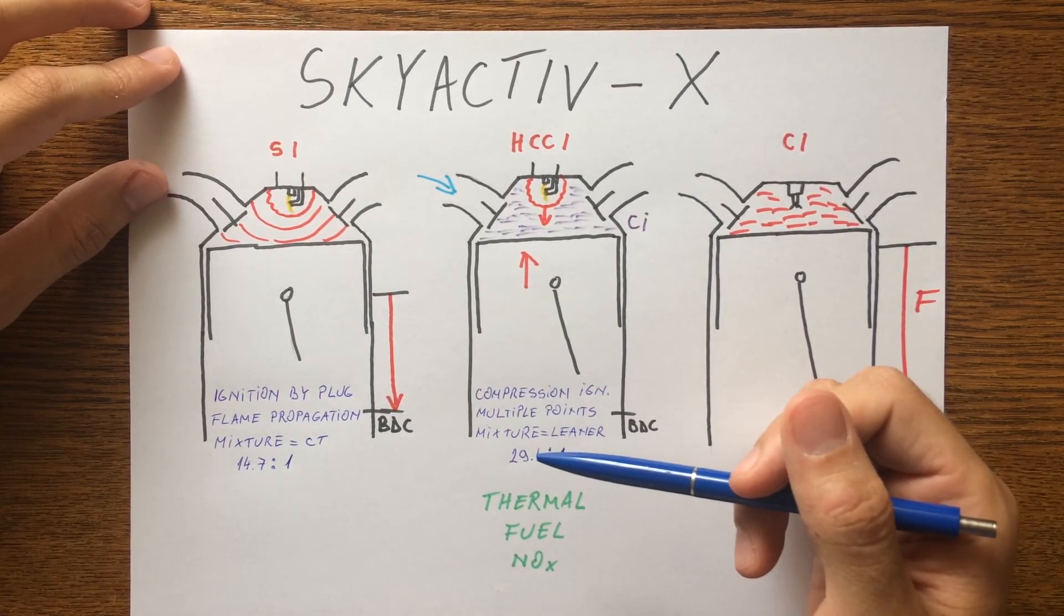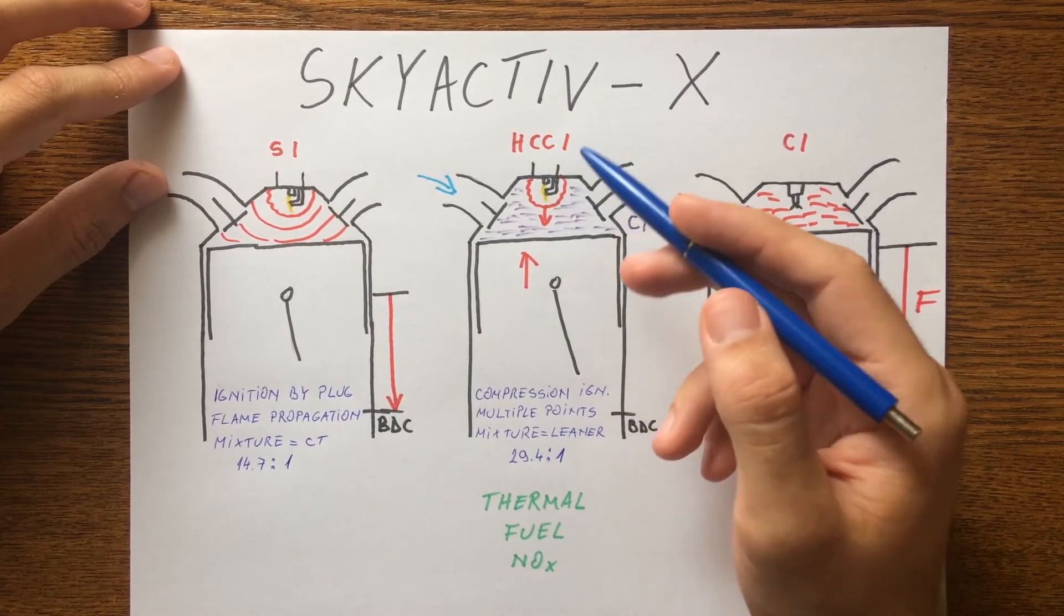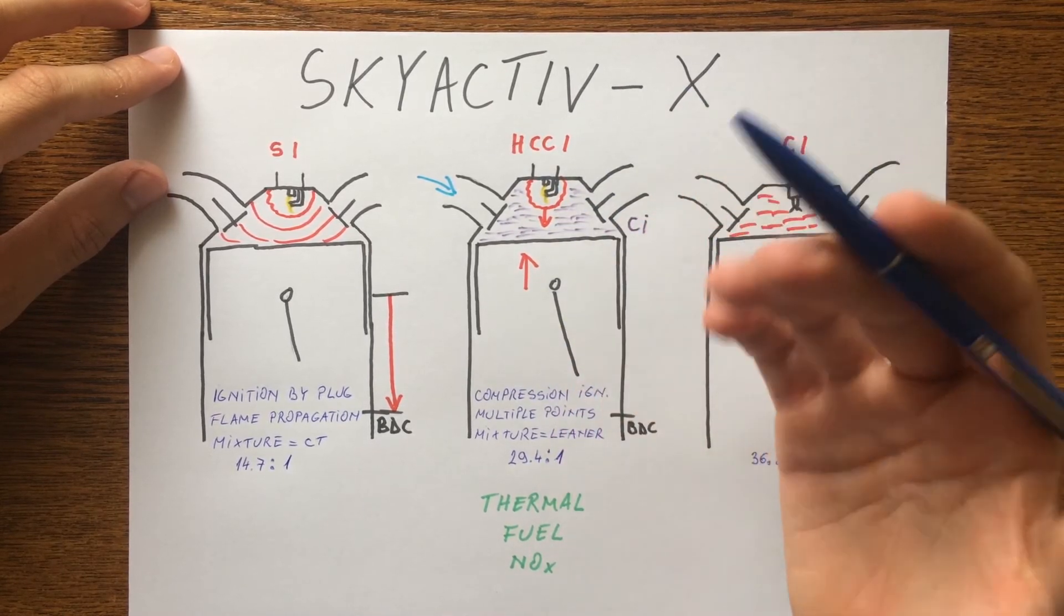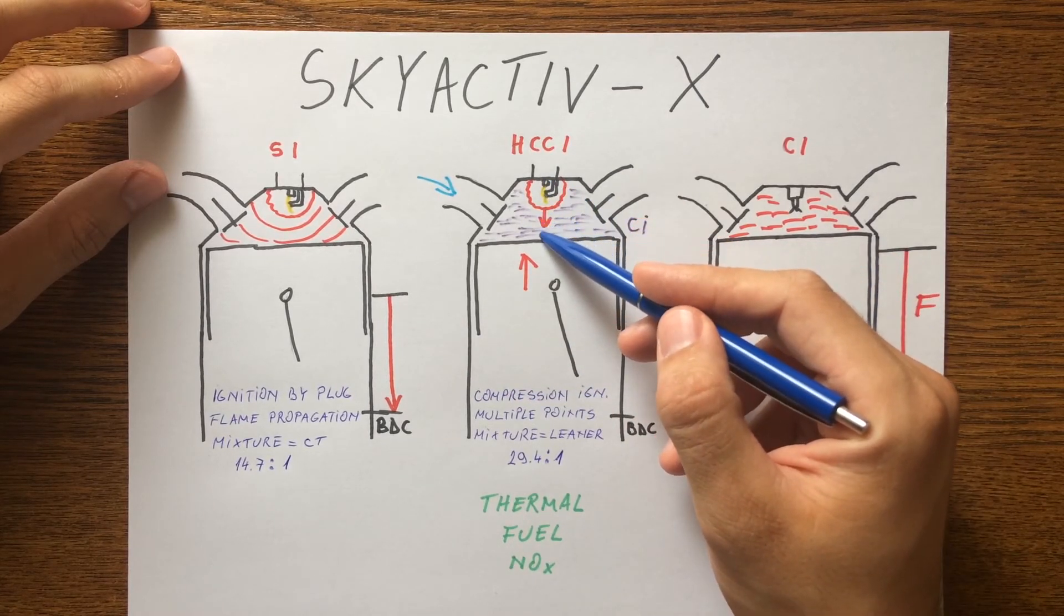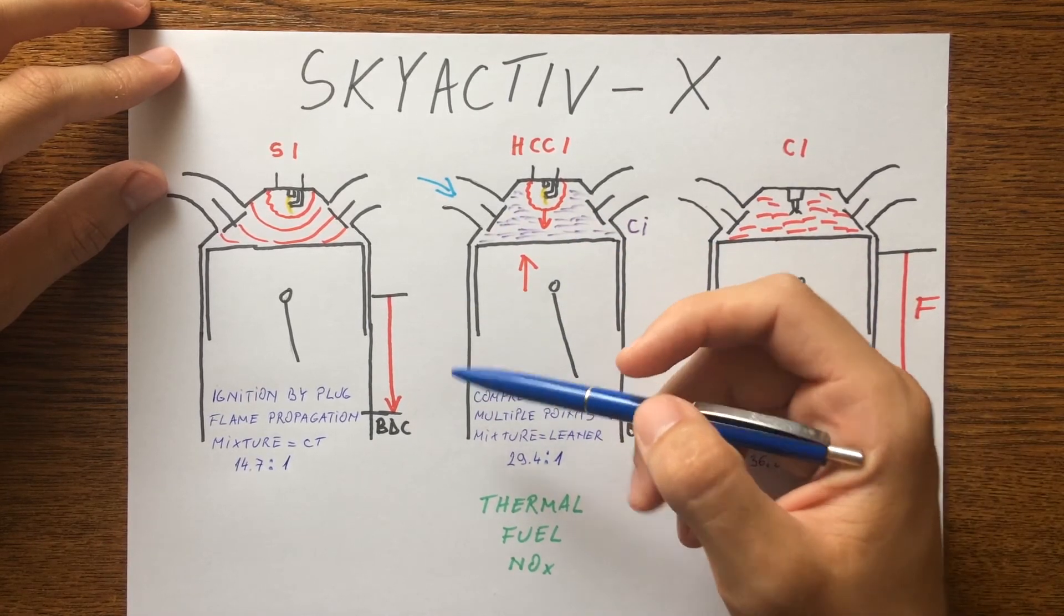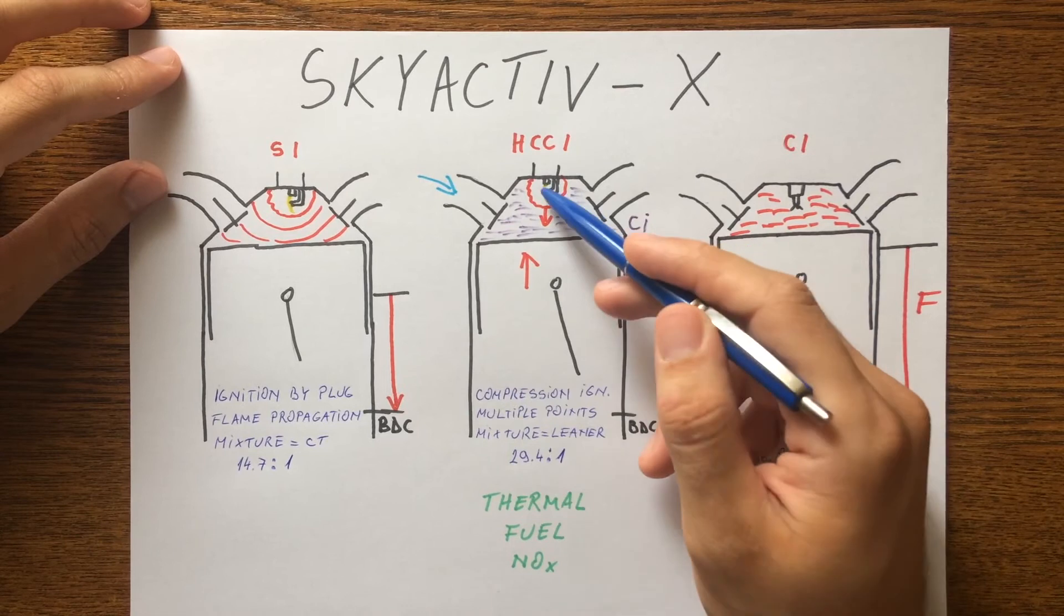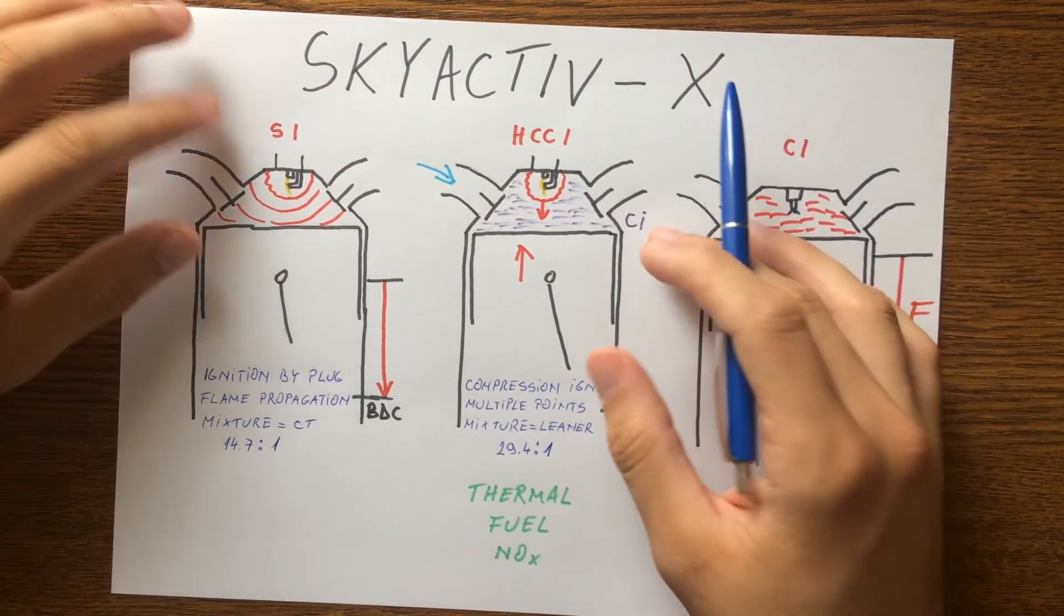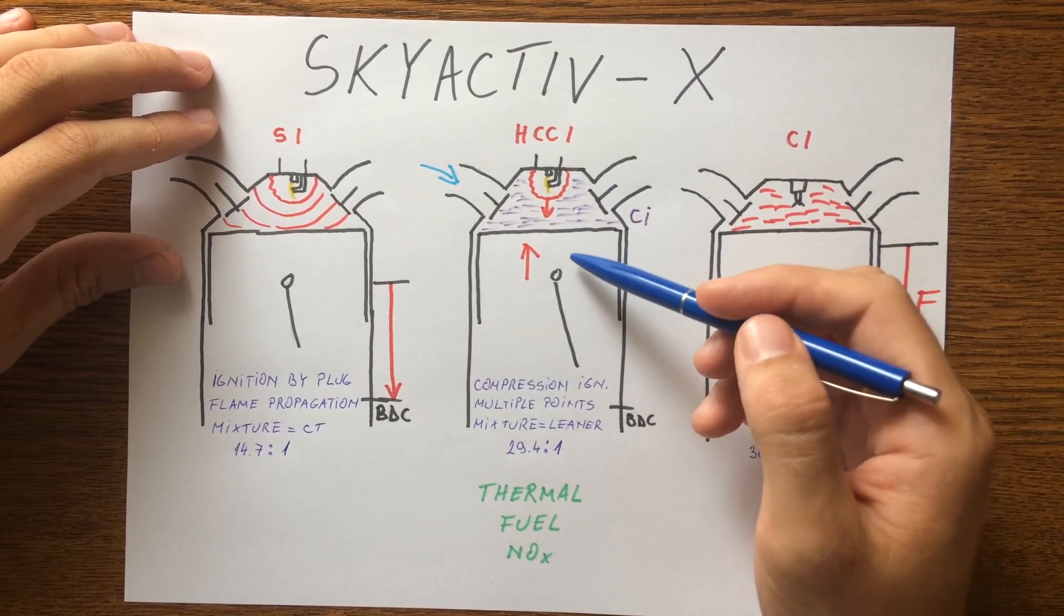To do that, it is required to have a spark plug in the structure as a control factor for the compression ignition. Spherical flame expanded by the spark plug ignition serves as a second piston, or as a so-called air piston, and further compresses the air-fuel mixture in the combustion chamber to facilitate the necessary environment for compression ignition to take place. By controlling the ignition timing by the spark plug, the compression ignition is expanded and the switch between them will be much smoother.